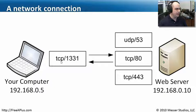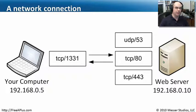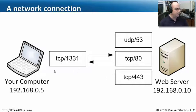Here's the way that this might be working. You might have running on a web server a DNS service for domain name lookups — it runs over UDP port 53. You may have a web server running on that computer on TCP port 80. You may also have a secure web server running on that for encrypted communication, maybe for a credit card or that type of information — it's running on TCP port 443.